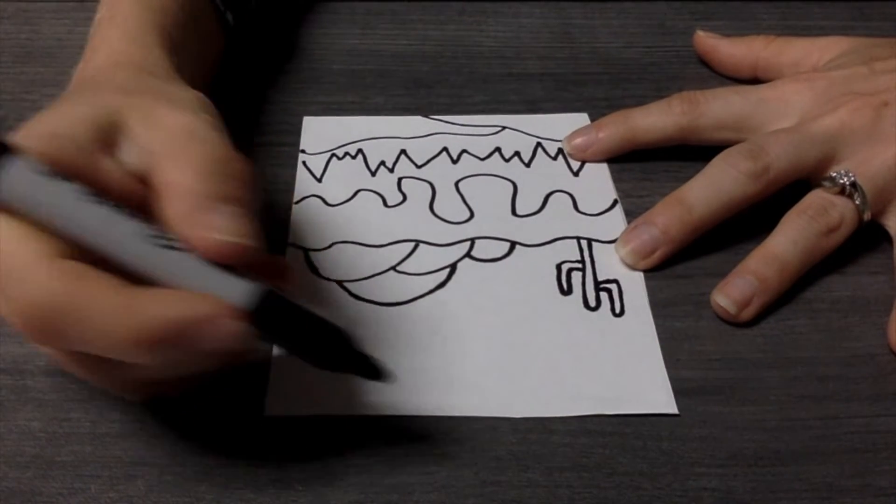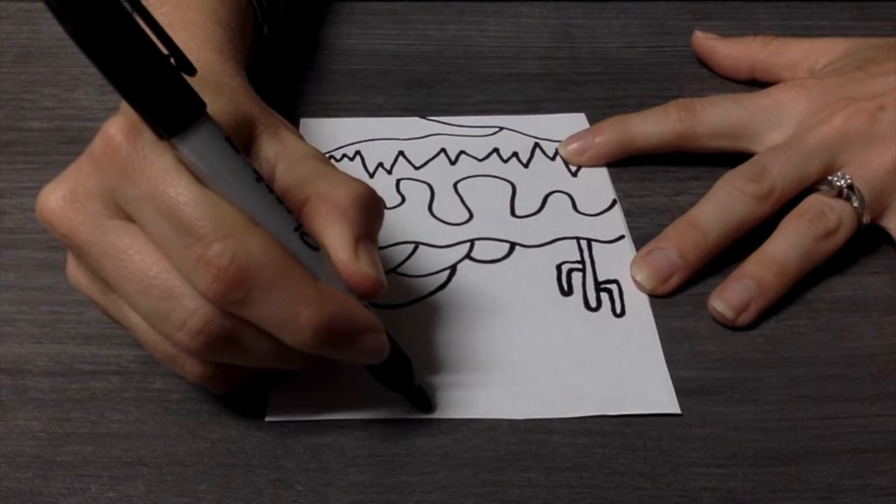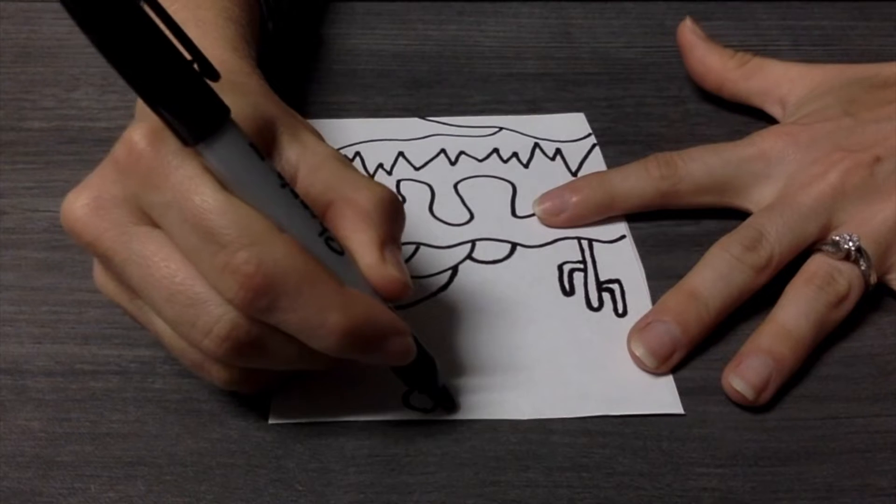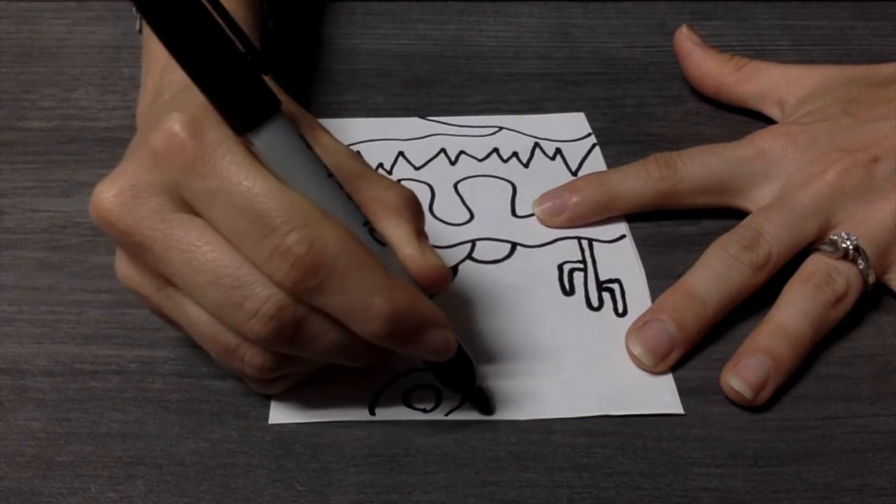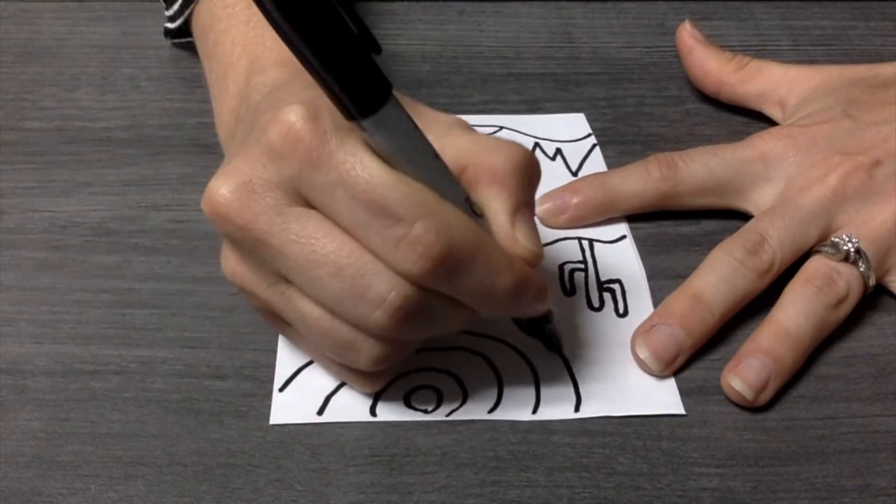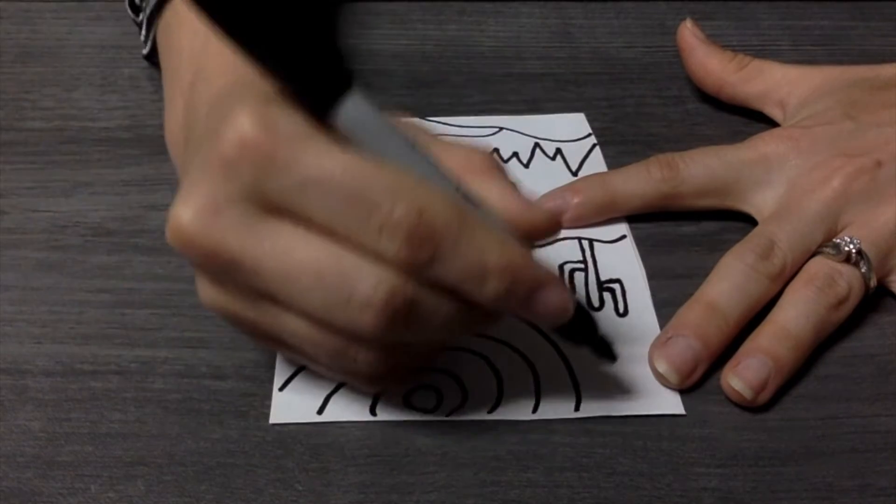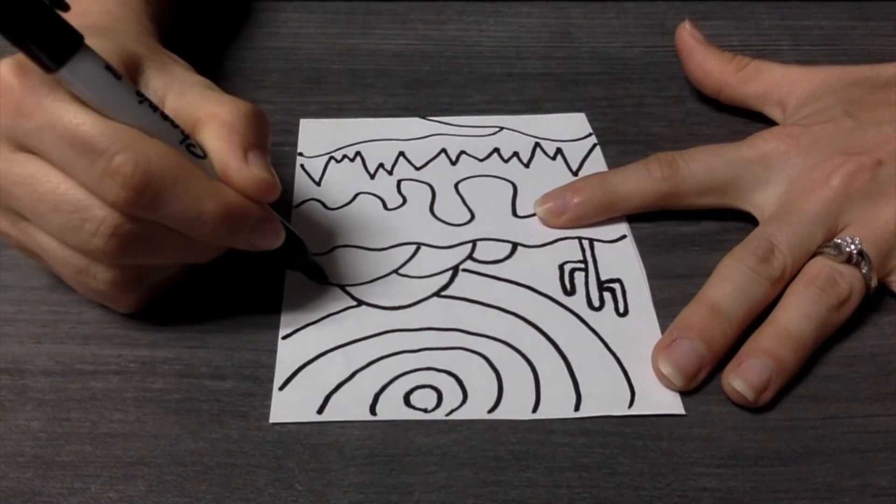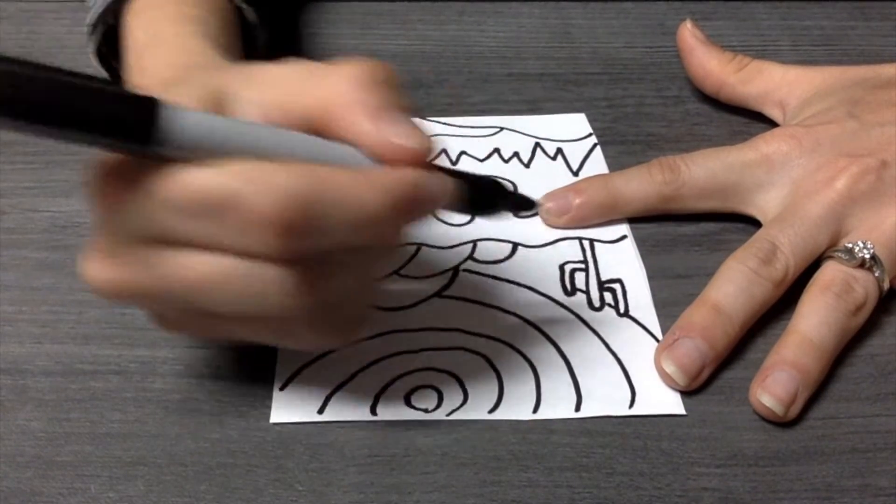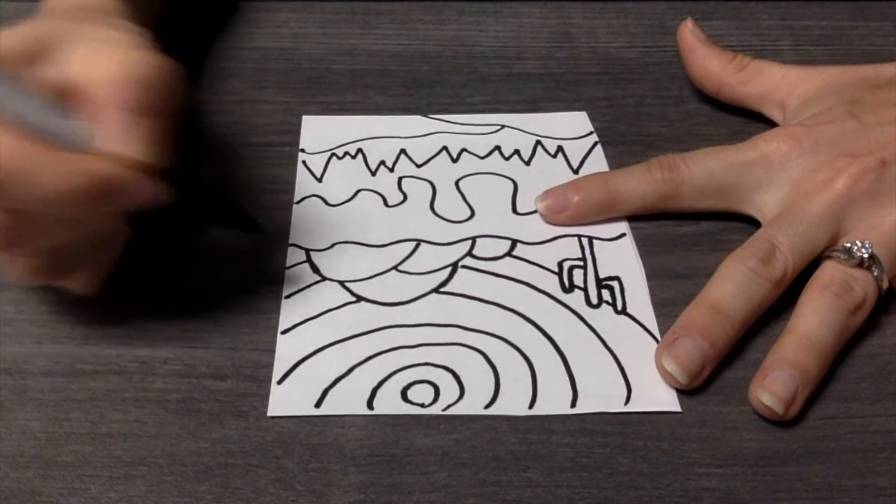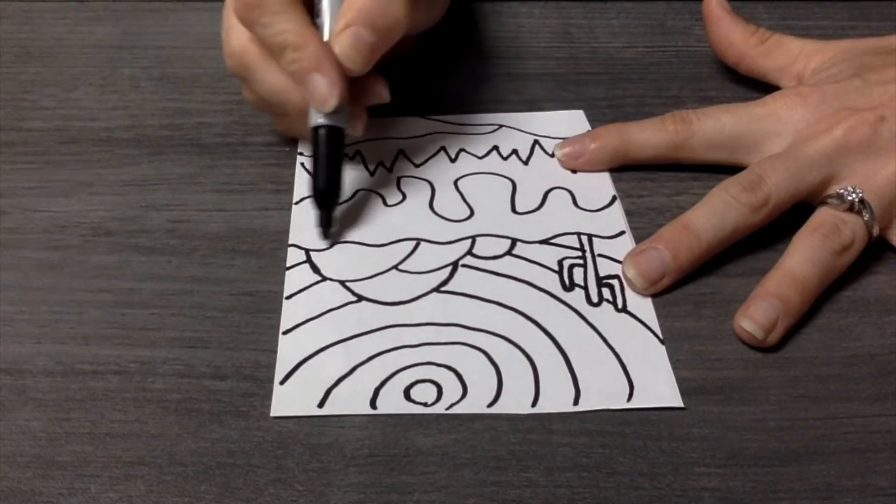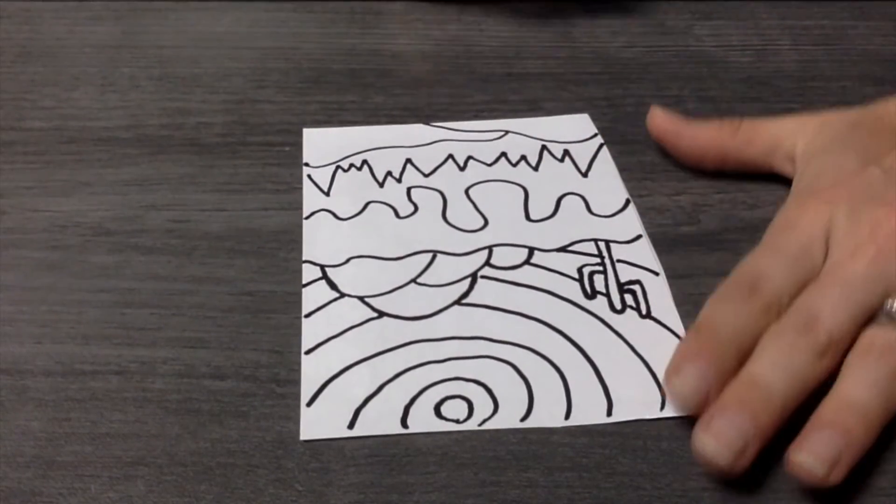And we can't have a desert without a sun in our sky. So we are going to start our circle in the top. Let this circle get bigger and bigger and bigger. Keep making your sun bigger and bigger in the sky. Go between the details to fill the space. All the way down to your wavy horizon light. And there you have your desert.